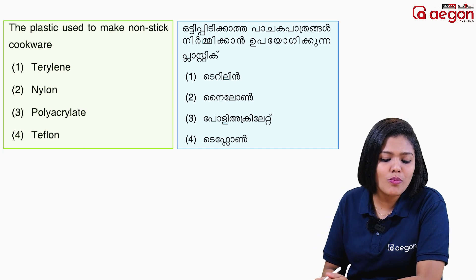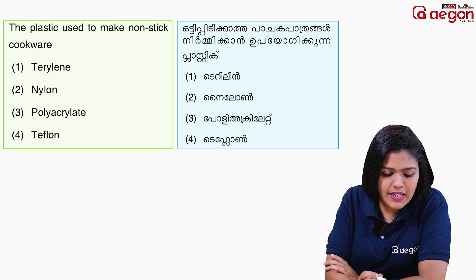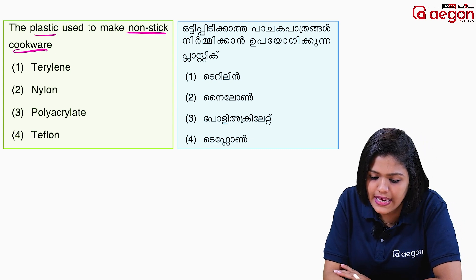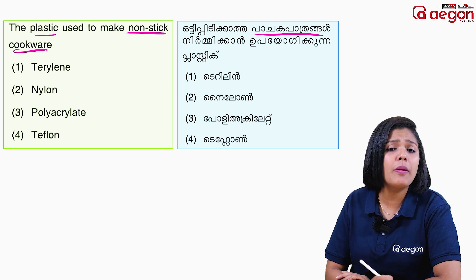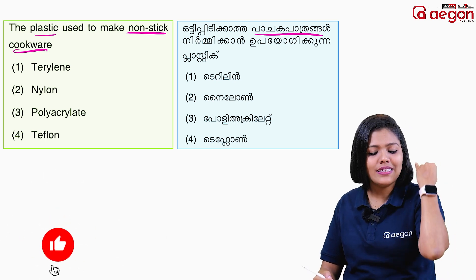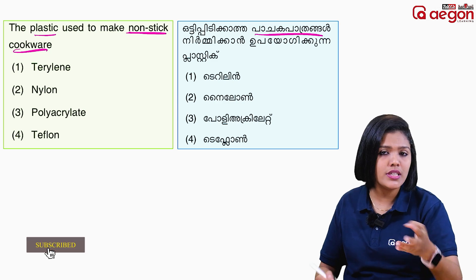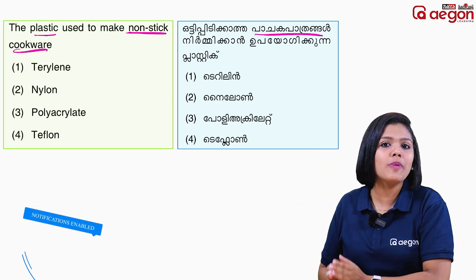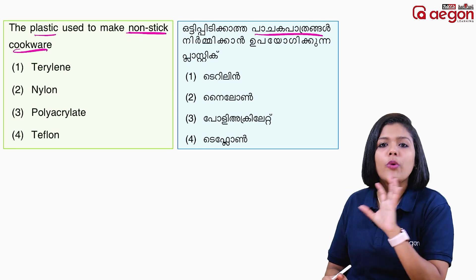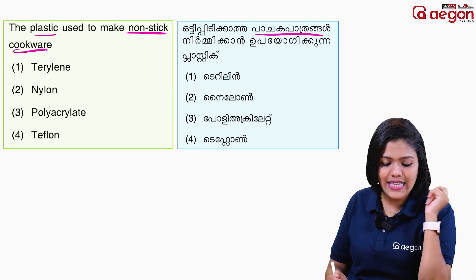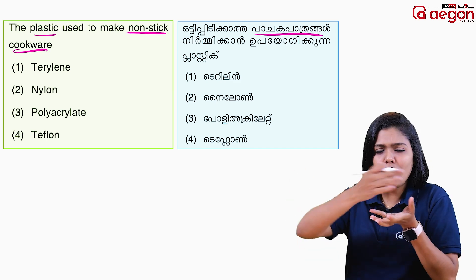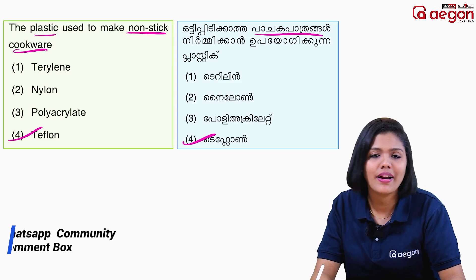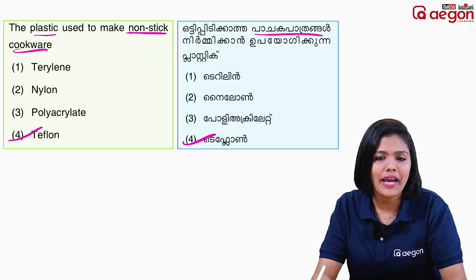Next question: what is the plastic used to make non-stick cookware? The options are terylene, nylon, polyacrylide, and teflon. The correct answer is teflon. We call this teflon coating, and it is used in non-stick diagnostic cookware.